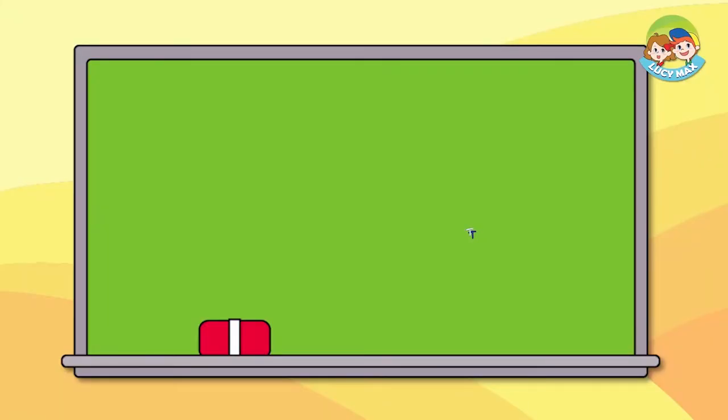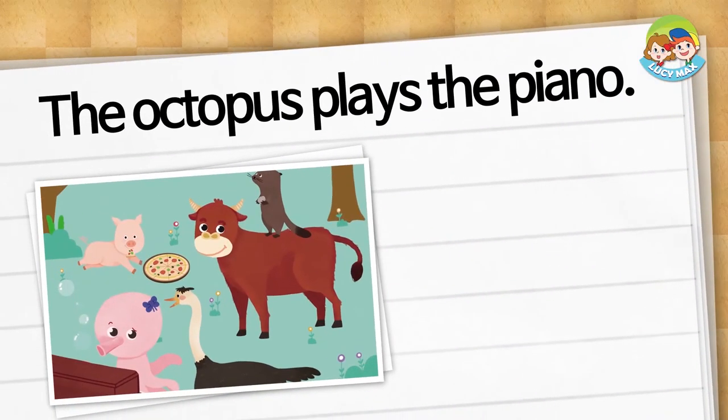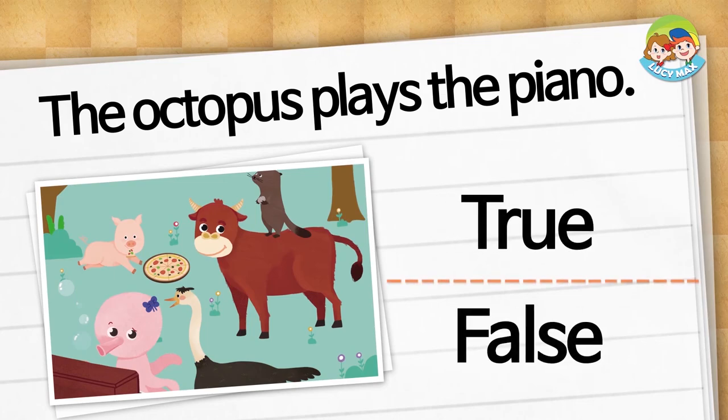Now you will take the story test. You can choose true or false. Choose true or false: the octopus plays the piano — is it true or false? It is true. That is the end of lesson eight. Did you have a good time? Me too. Goodbye!